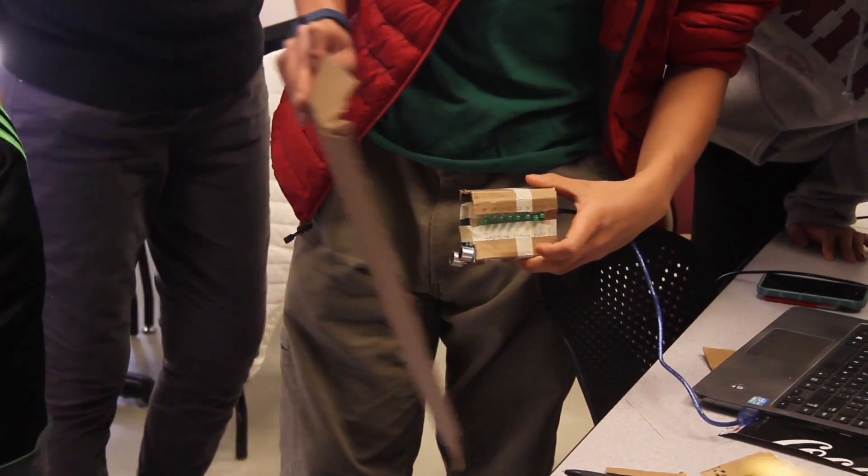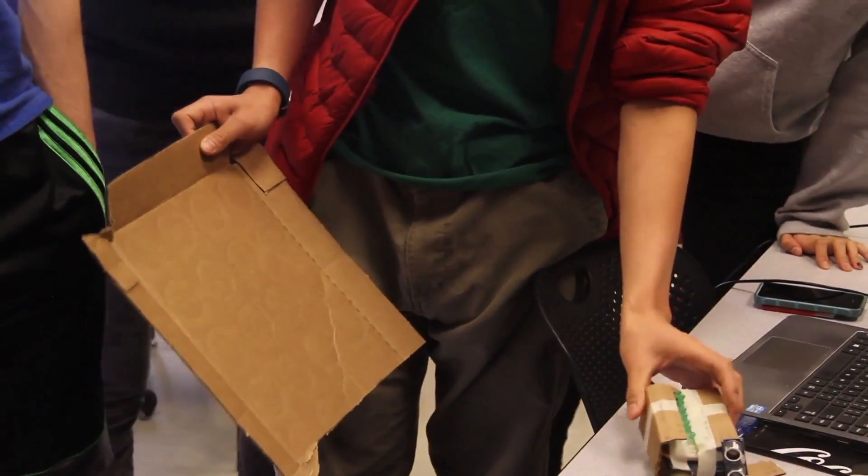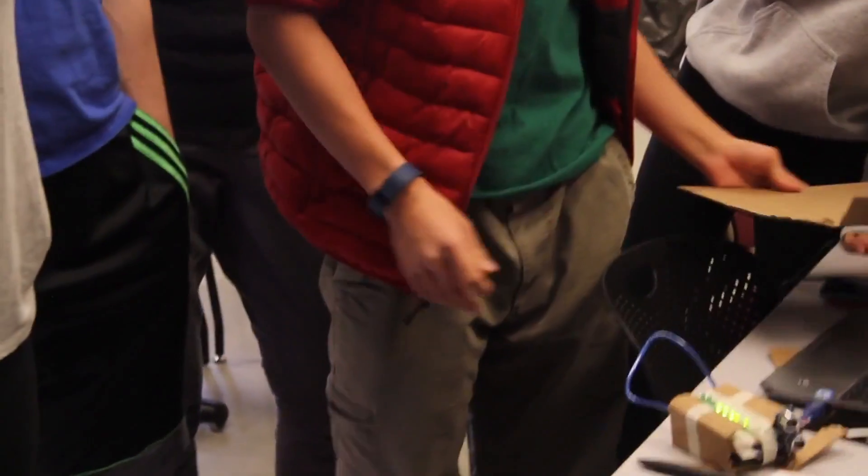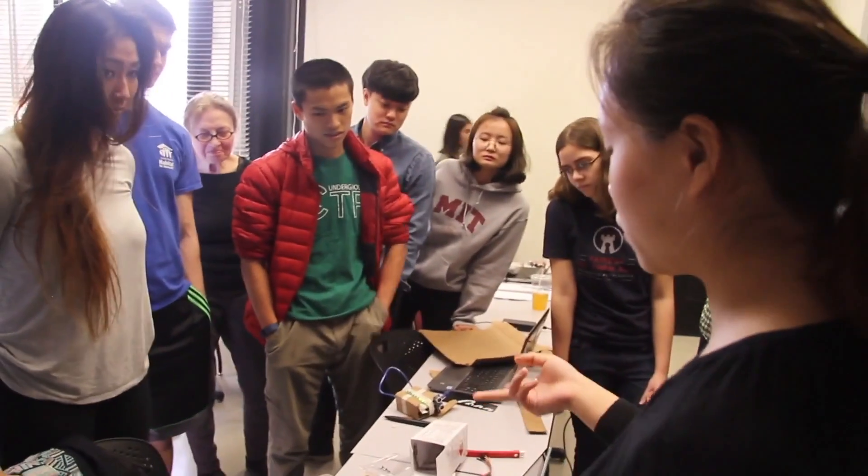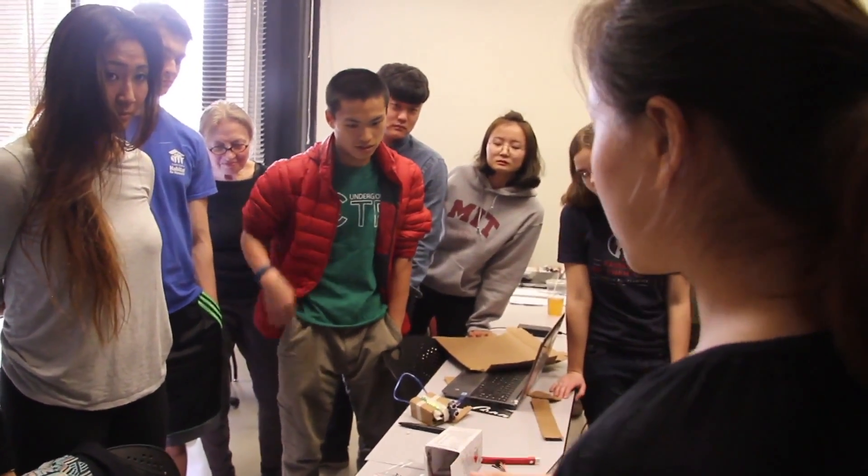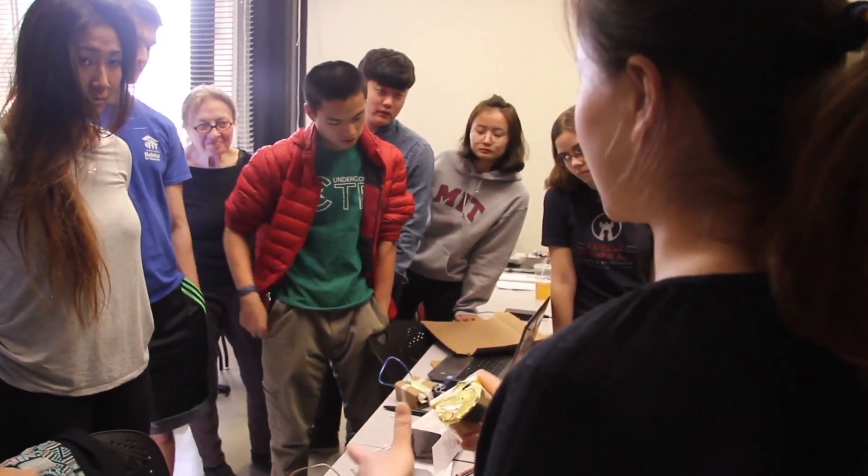So initially, we kind of wanted to combine them together, like how many lights show on there, and they would display the number over here and then win the lottery. But since they're on two different Arduino boards, we just kind of made it separate and play with the LEDs right now.